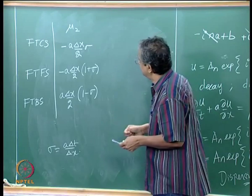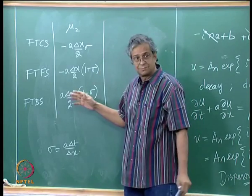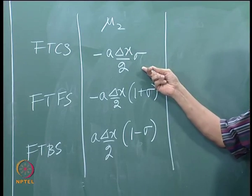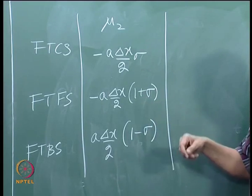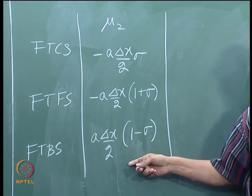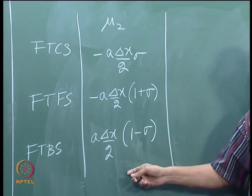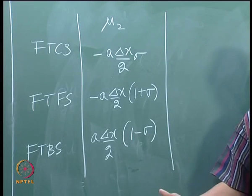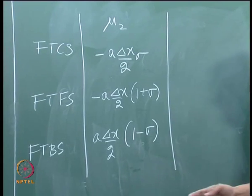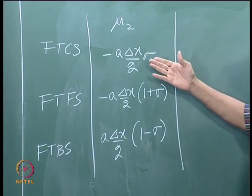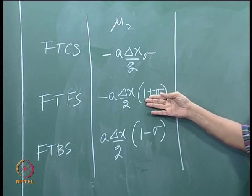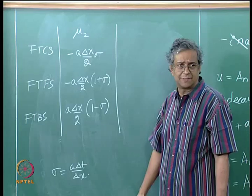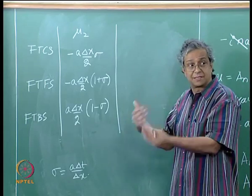For FTCS, mu_2 is negative — that is negative. For FTBS, 1 - σ could be positive when 0 < σ < 1, which is exactly the stability condition we got. If mu_2 is negative, you get an unstable situation; if mu_2 is positive, you get decay and the algorithm is stable. So what we did with the stability condition, we actually get here from the modified equation analysis.